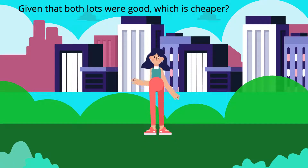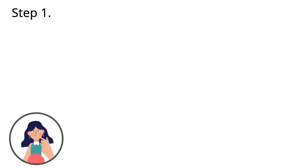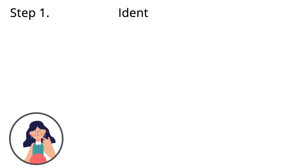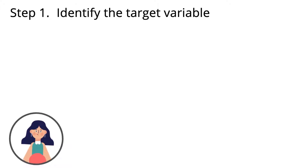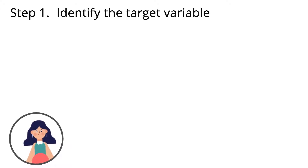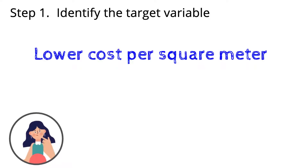Let us now solve the problem. Step number one: identify the target variable. The problem is asking which of the two brokers is selling cheaper — that is, which of them has a lower cost per square meter of lot.